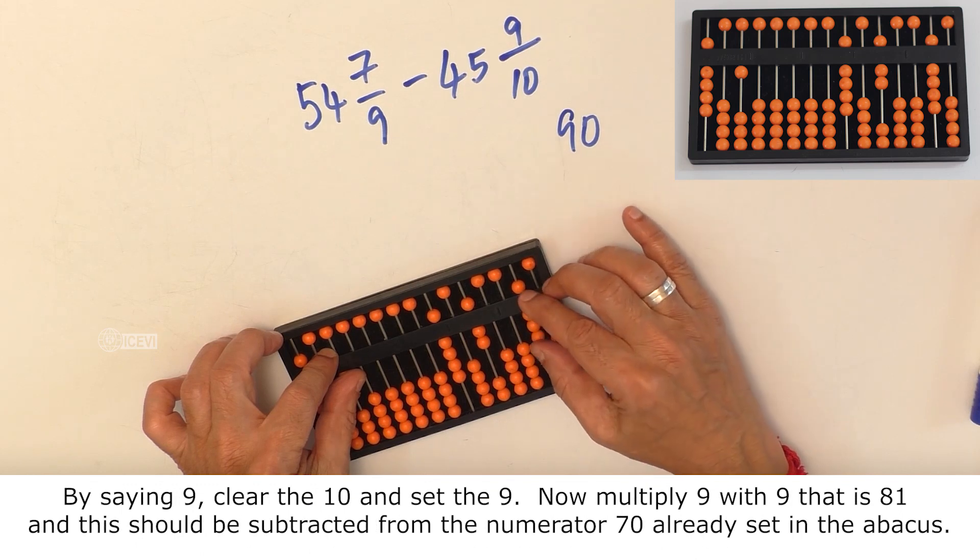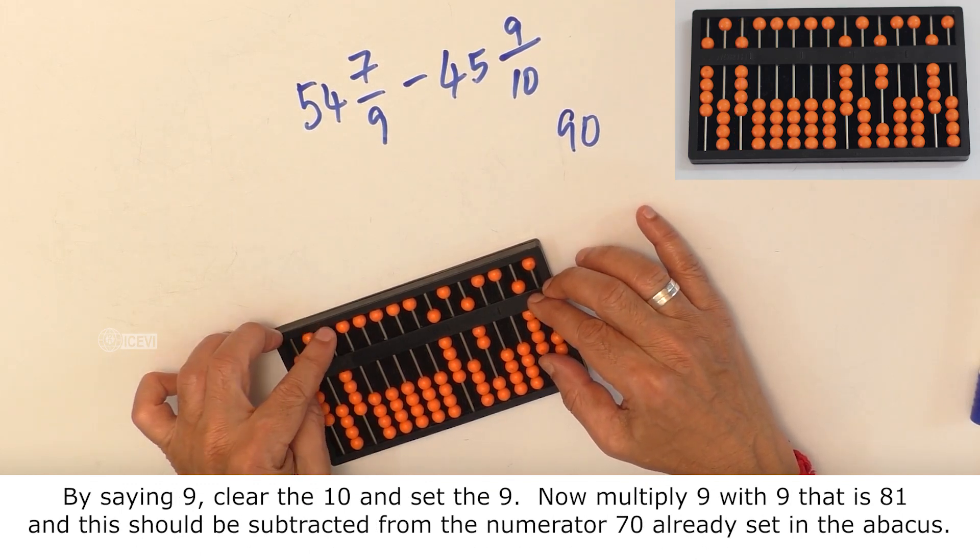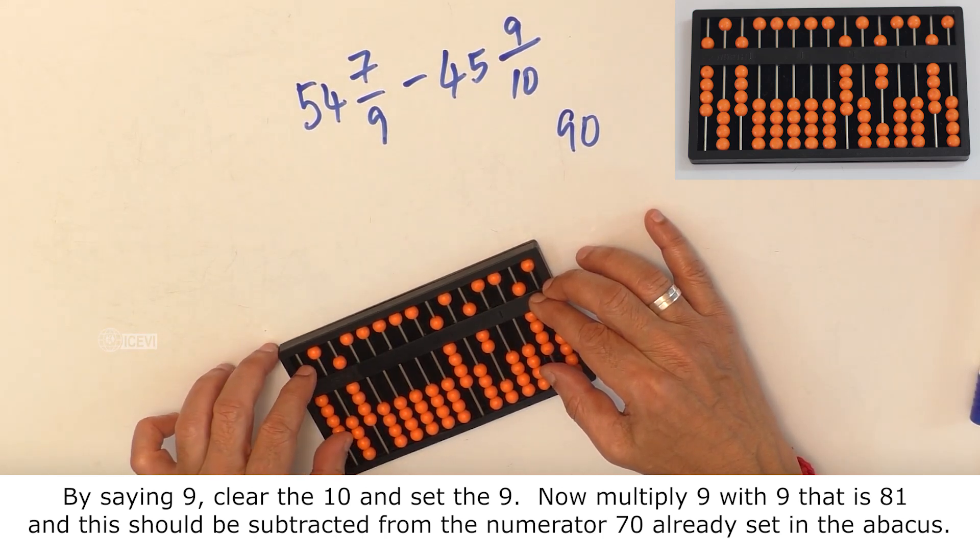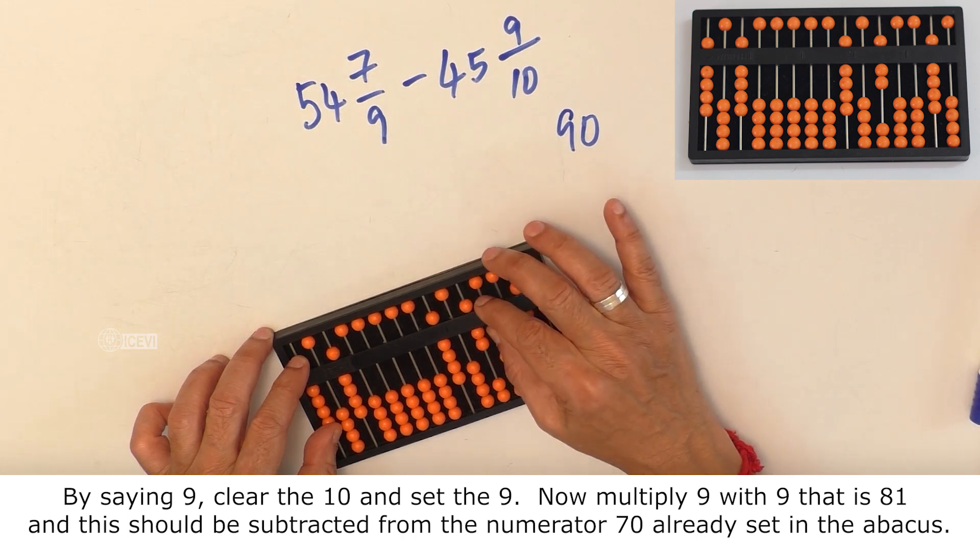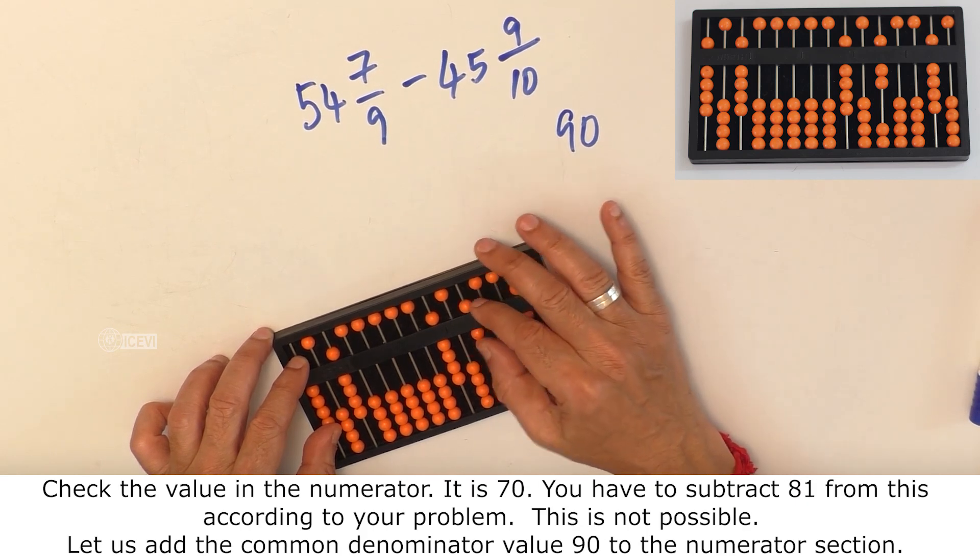By saying 9, clear the 10 and set 9 there. Now multiply 9 with 9. That is 81. This should be subtracted from the numerator 70 already set in the abacus. Check the value in the numerator. It is 70. You have to subtract 81 from this according to your problem. This is not possible.